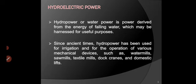Hydroelectric power is a power derived from the energy of falling water, which may be harnessed for useful purposes. Since ancient times, hydropower has been used for irrigation and for the operation of various mechanical devices such as water mills, saw mills, textile mills, and domestic lifts. So the energy of water can be used for many different purposes.